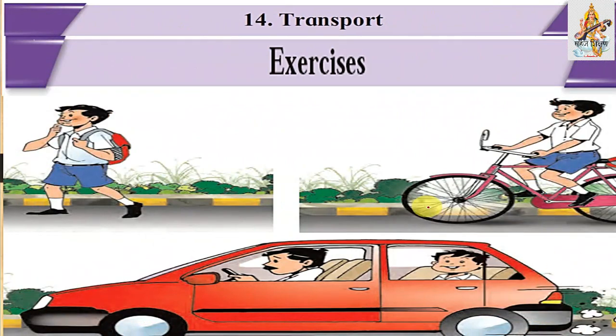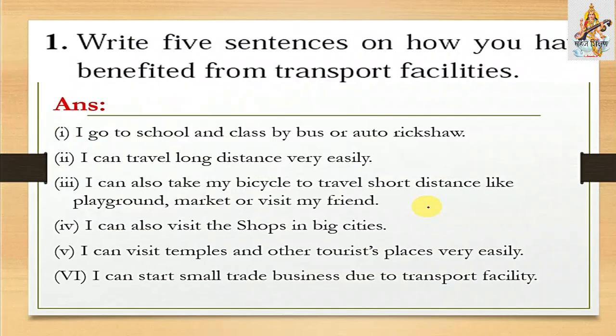Question number one: Write five sentences on how you have benefited from transport facilities. The answer — first point: I go to school and class by bus or rickshaw. Second point: I can travel long distances very easily.